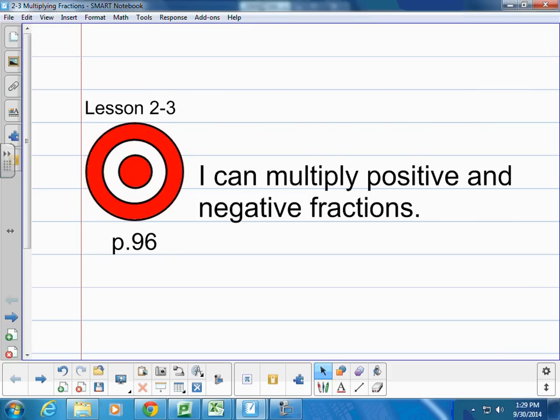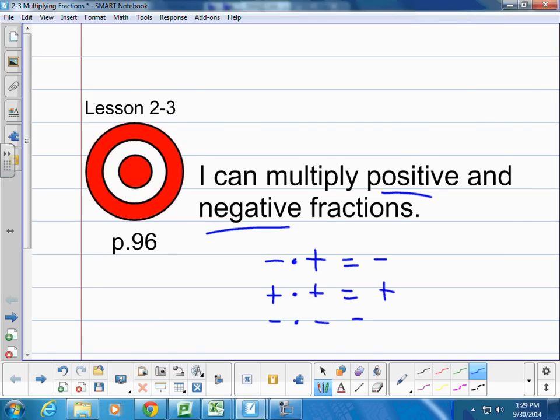I can multiply positive and negative fractions. You have had experience multiplying fractions before, I know for sure in 6th grade. So this is somewhat of a review, the only new thing is now that you're looking at positive and negatives. So we just have to review those rules: a negative times a positive is a negative. So if the signs are different, it's a negative, but if the signs are the same, then it's going to be a positive answer.